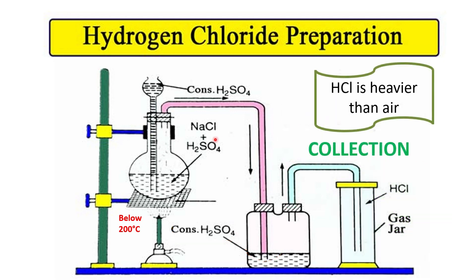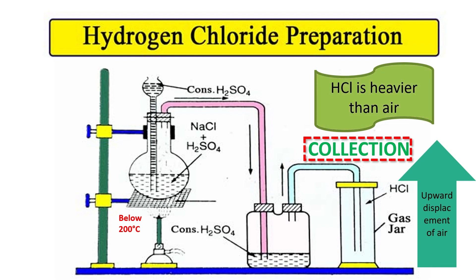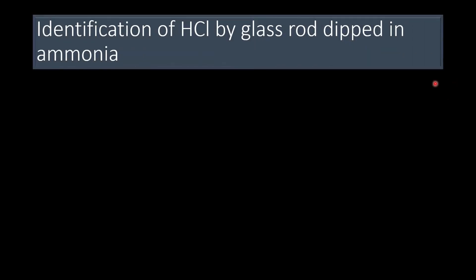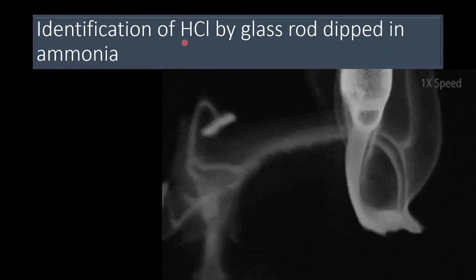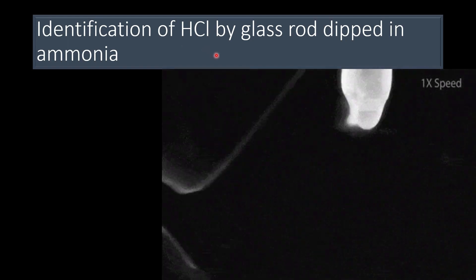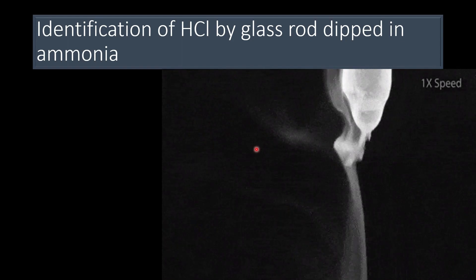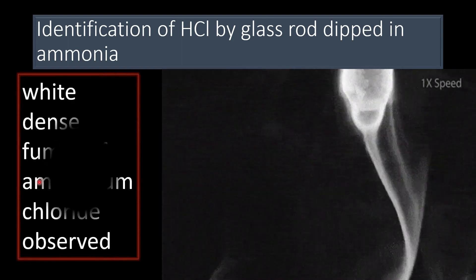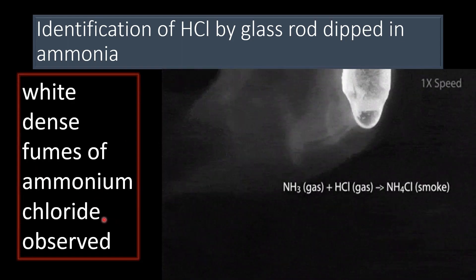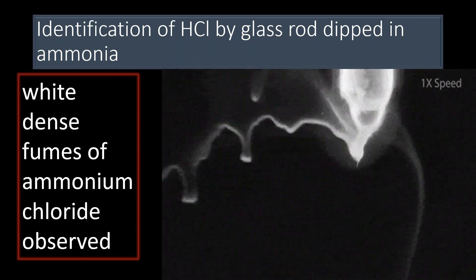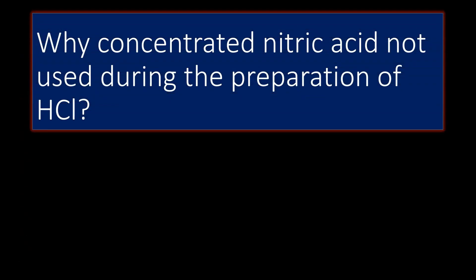The last part is how do you collect HCl gas? It is collected by upward displacement of air. Once you fill the HCl, the air will escape through this. Why is it happening? Because HCl is heavier than air. How do you identify HCl gas? We use a glass rod dipped inside ammonia and hold it inside the HCl gas. You will observe white dense fumes of ammonium chloride. That confirms that it is HCl gas.